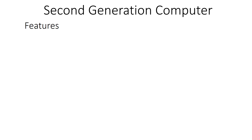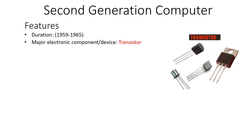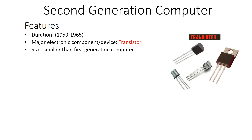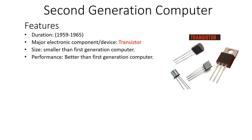The second generation computers had a duration of 1959 to 1965. The major electronic component was the transistor. The size of second generation computers was comparatively smaller than the first generation, and their performance was improved — better than the first generation computers.